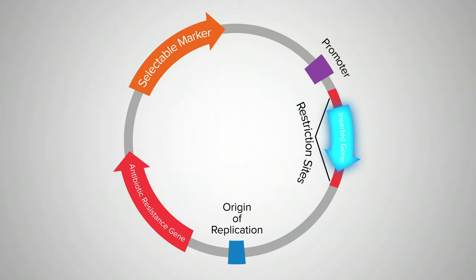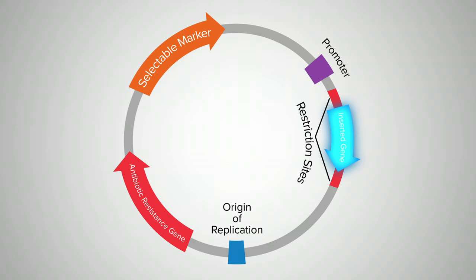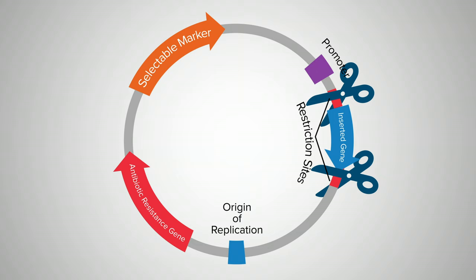Many plasmids are designed so scientists can insert genes they want to be expressed in organisms. One way to do this is through restriction sites. Restriction enzymes recognize these sites and cut out the present gene like molecular scissors. Then, a different gene can be inserted into the site.